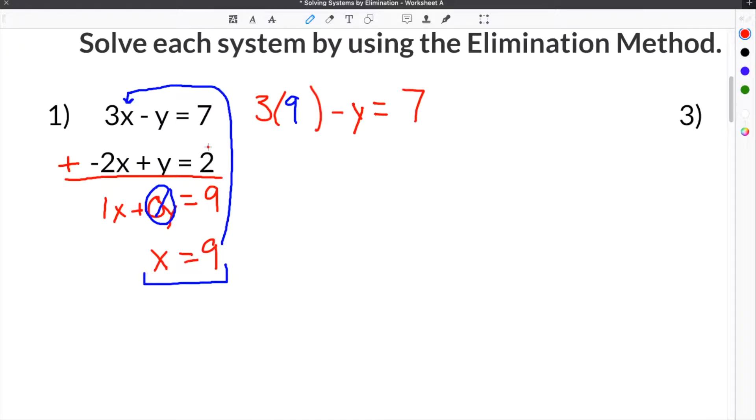So we took our x, which was 9, and we substituted it in for x. Then we're going to simplify this. So 3 times 9 is 27, minus y equals 7. Then we have to solve for y. So we're going to subtract 27 from this side, subtract 27 from this side. These cancel.